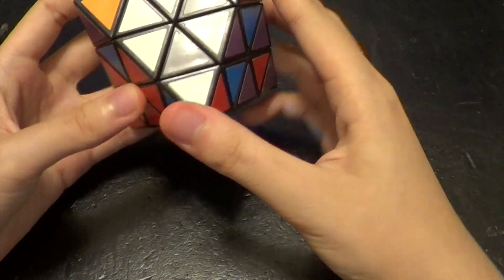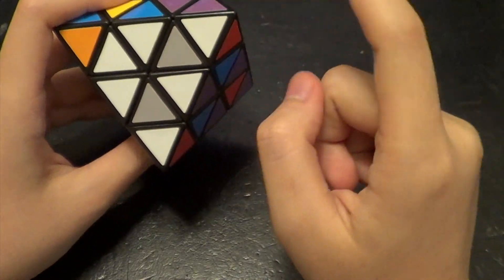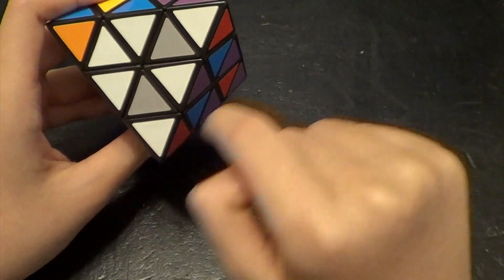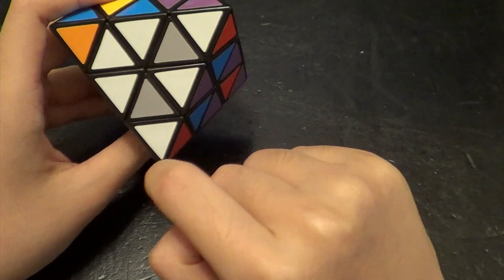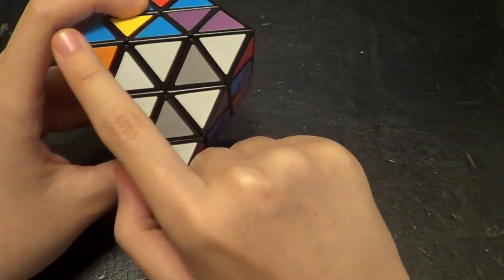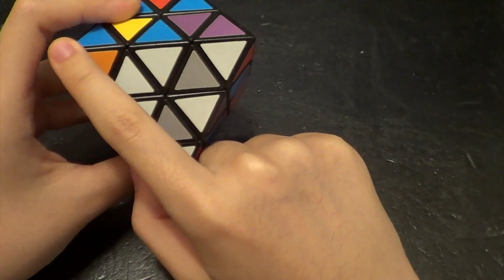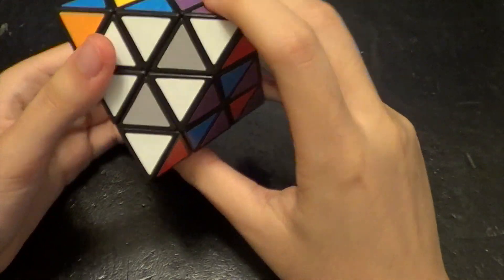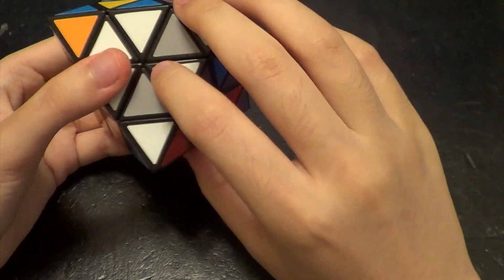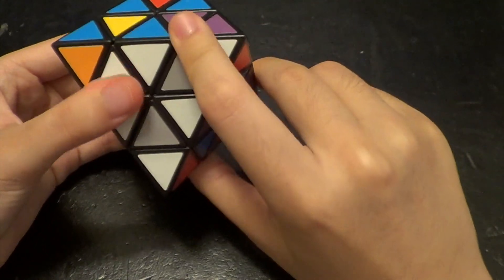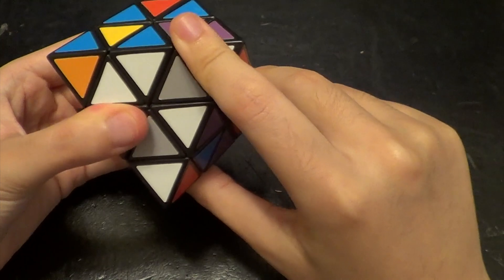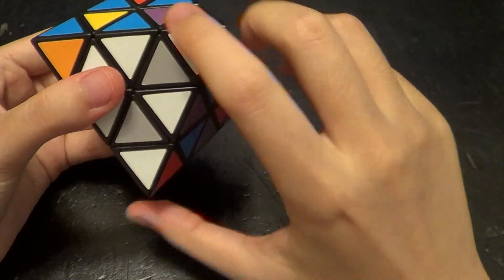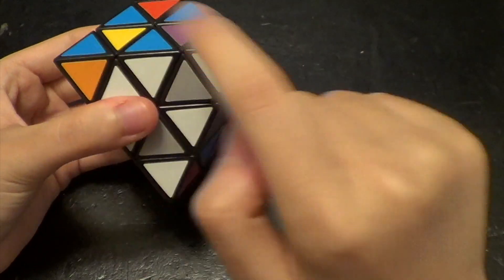So we want upper right to go to left right, and then left right to go to upper left. So essentially we would need to do the previous sequence we did, R U' R' U, backwards twice in order to get it to cycle twice.